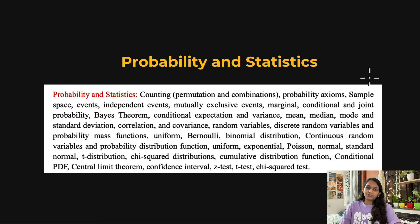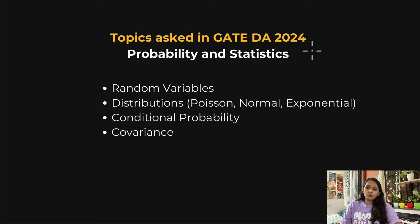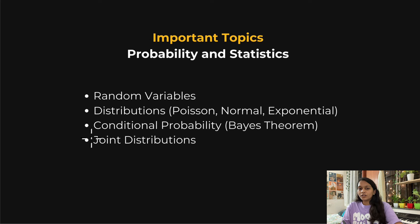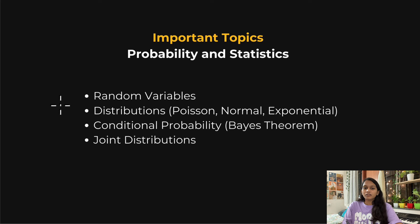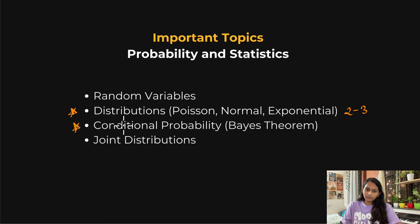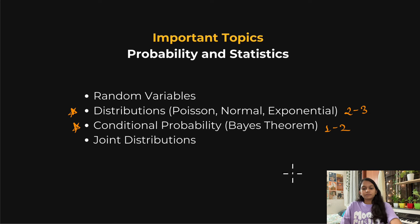For probability and statistics, these are the topics mentioned in the official GATE syllabus. From GATE DA 2024, questions were asked from random variables, distributions, conditional probability, and covariance. The important topics I recommend are: random variables, distributions, conditional probability, and joint distributions. Joint distribution and conditional probability are easy topics. From distributions, two to three questions will definitely be there in the exam. From conditional probability, one to two questions will definitely be there, and joint distributions will also have at least one question.